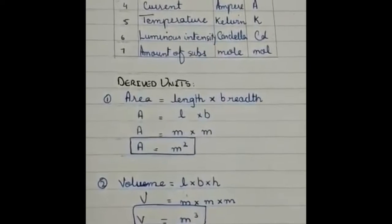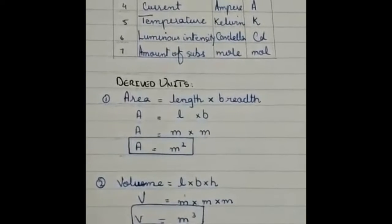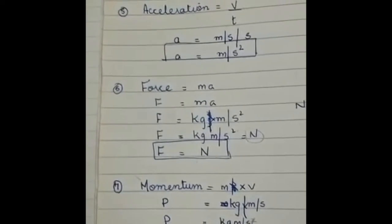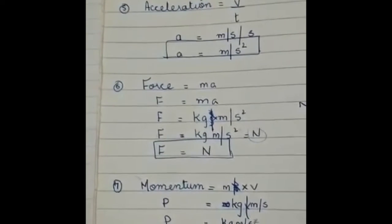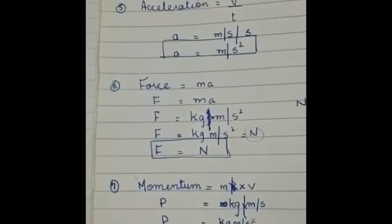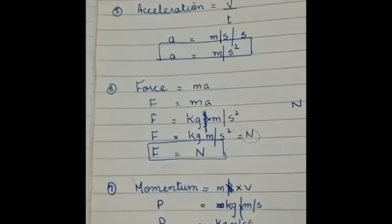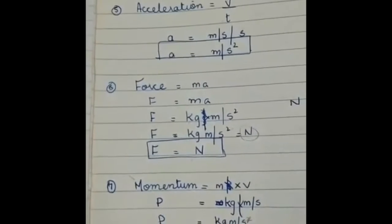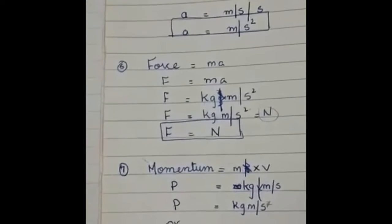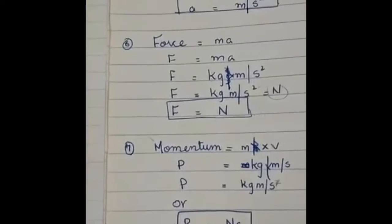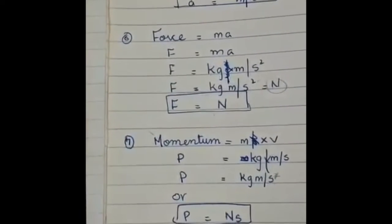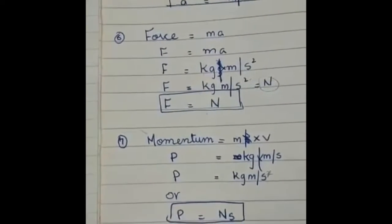Density which is mass per unit volume, that is kilogram per meter cube. Then velocity which is distance per time, that is meter per second. Acceleration, that is velocity per time, that is meter per second square. Force, that is mass into acceleration, which is kilogram meter per second square, or we can say its unit is Newton.